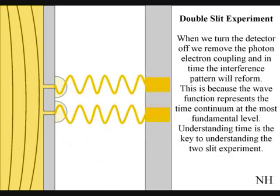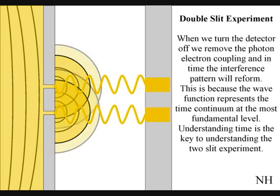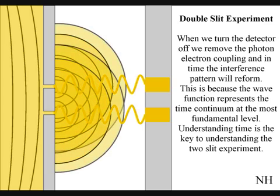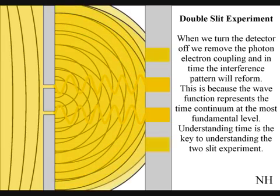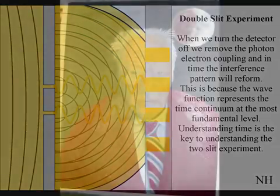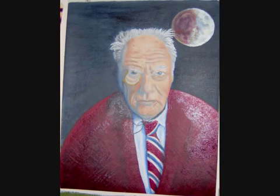If we turn the detector off, we remove the photon-electron coupling, and in time, the interference pattern will reform. Just like in Newton's first law of motion, the interference pattern will continue to maintain its state, unless acted upon by an external force.